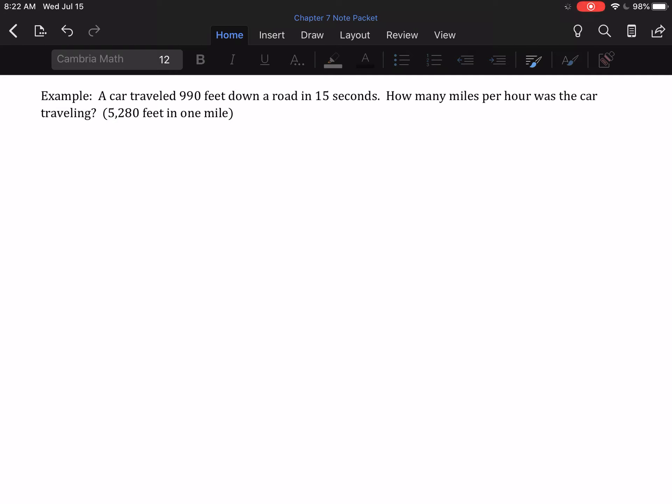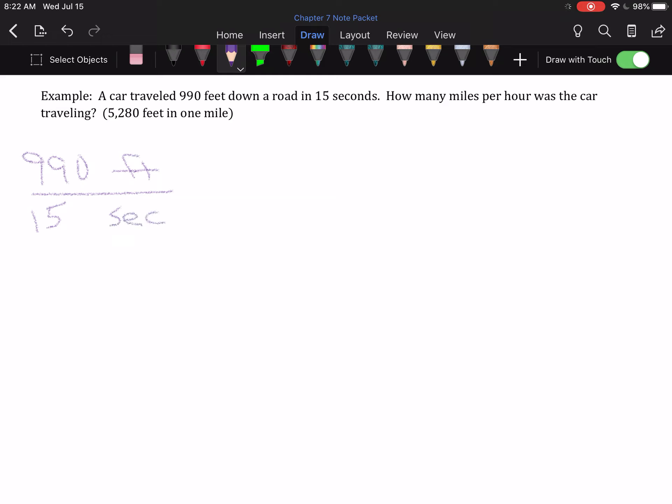A car travels 990 feet down a road in 15 seconds. How many miles per hour was the car traveling? And then we're told how many feet there are in a mile. So let's start with what I was told. A car travels 990 feet in 15 seconds. And I'm asked for miles per hour. That means I have to change both feet and seconds. I will need one fraction for each. I'm going to start with feet. I want to change feet to miles. Because feet were in the numerator, to cancel the unit, it has to go in the denominator. Which means miles will go to the numerator. And we are told here that there are 5,280 feet in one mile.